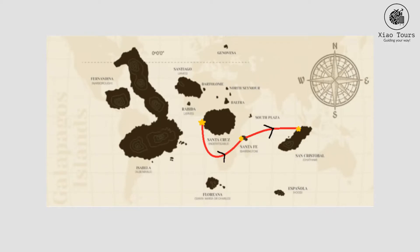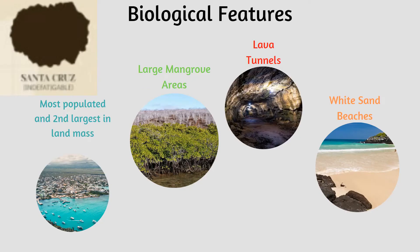Our first destination will be Santa Cruz, the first of three islands that we'll be visiting. Santa Cruz is the second largest island and the most populated, as it is in the centre of the Galapagos. The natural beauty and features of this island are mesmerising, as it has the largest accessible lava tunnels, six vegetational zones, white sand beaches, some of the largest mangrove areas, and is home to many species of animal, making this a perfect first destination.